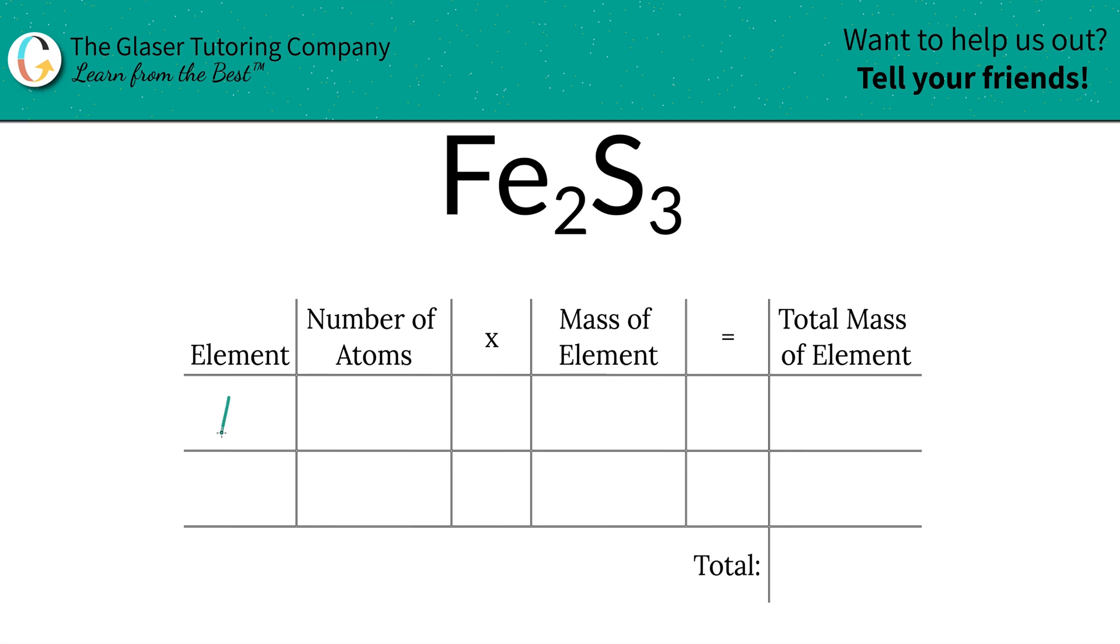So the first thing is we're going to write down the elements we see in the compound. So we have iron, and we have sulfur. Next then, to write down the number of atoms, that's where the subscripts come into play. So we have two irons, and we have three sulfurs.